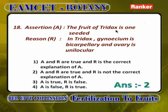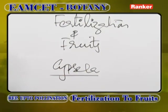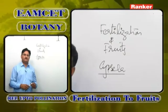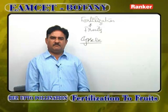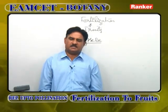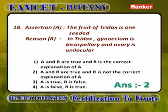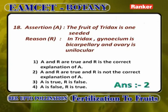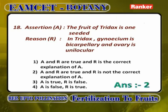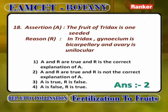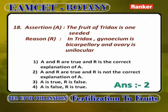The fruit of Tridax is cypsela — a fruit of the family Asteraceae, developing from bicarpellary, syncarpous, unilocular, inferior ovary. The fruit shows persistent hairy pappus that helps in parachute mechanism of dispersal. The fruit is one-seeded not because of bicarpellary ovary but because of presence of a single ovule. A and R are correct, but R is not the correct explanation of A.